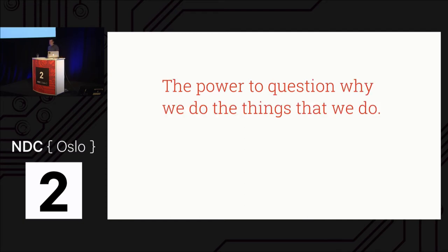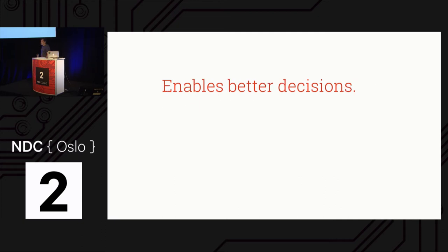This gives us the power to question why we do the things we do. A lot of things we do are just because the last guy did it that way, or we've always had this feature because it was in the first version. We can start questioning everything in our system, even features that have been there a long time. It enables us to make better decisions — more unbiased, more objective decisions — that are hopefully better for us and better for our users.